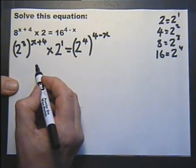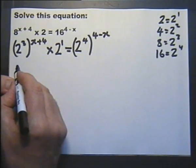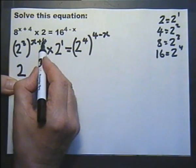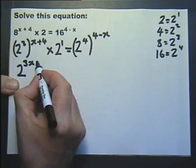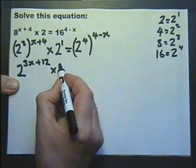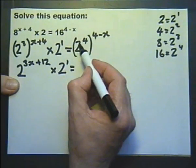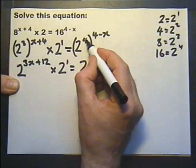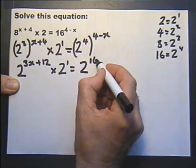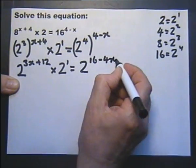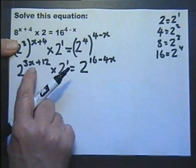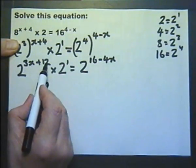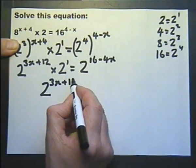Now using the third rule of indices, when we raise a power and raise the power again, we can write that as the base raised to the product of the two indices. In other words, 3 multiplied by (x plus 4), giving us 3x and 3 times 4. The same applies on this side: 2 to the power of 4 raised to the power of 4 minus x becomes 2 raised to the power of 4 times 4 and 4 times minus x. Using the first rule of indices, when we multiply we add the indices, so this becomes 2 raised to the power of 3x plus 12 plus 1, in other words 3x plus 13.